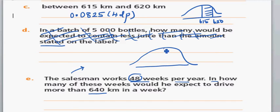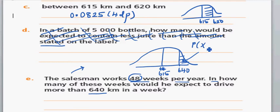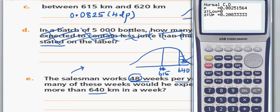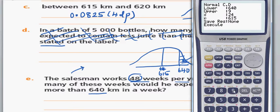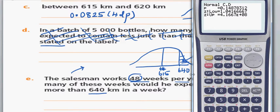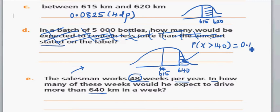On the normal curve, 615 is in the middle. The question is what is the probability that X is greater than 640. Using the calculator, set lower to 640 and upper to 99999, with the same mean and standard deviation. The probability of the salesman traveling more than 640 kilometers is 0.1488 to 4 decimal places.